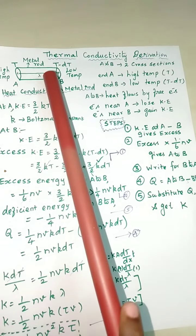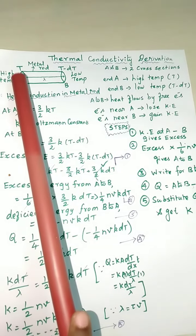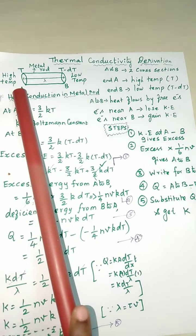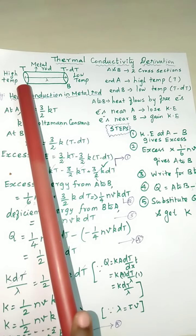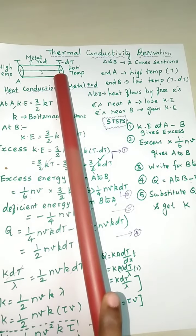From A to B, the heat can flow from this end A to B by the free electrons, because this metal rod has a lot of free electrons. The electrons near the end A lose its energy and the end B gains its energy.